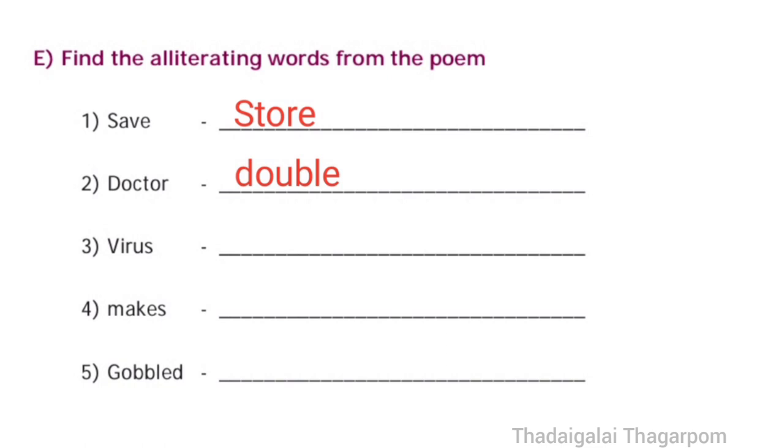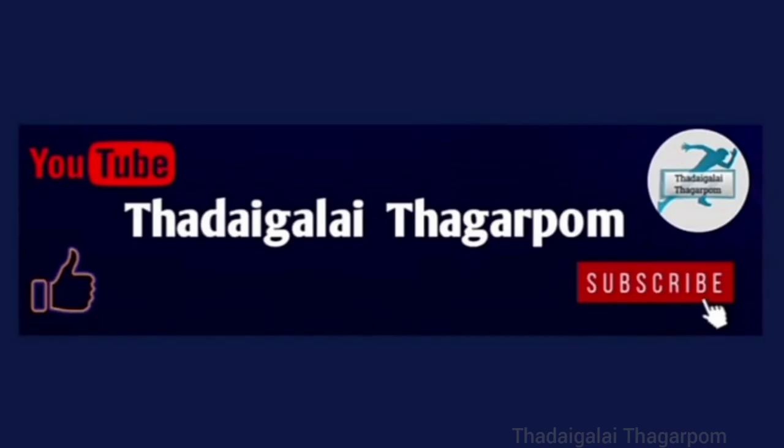Third one, virus. The answer is very. Fourth one, makes. The answer is most. Fifth one, gobbled. The answer is give.